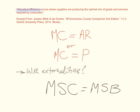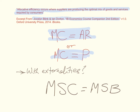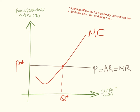Allocative efficiency occurs where suppliers are producing the optimal mix of goods and services required by consumers — this definition is taken from the Blink and Dorton IB Economics course companion e-book. Allocative efficiency occurs where marginal cost equals average revenue, and since average revenue is the same thing as price, it occurs where marginal cost is equal to price. For industries with externalities, allocative efficiency occurs where marginal social cost equals marginal social benefit.